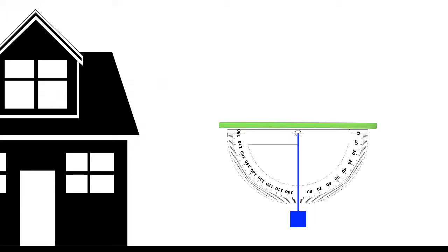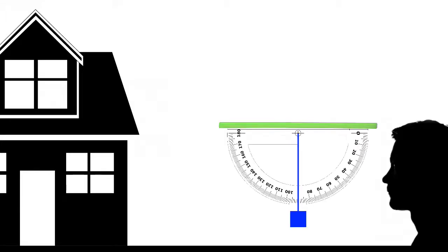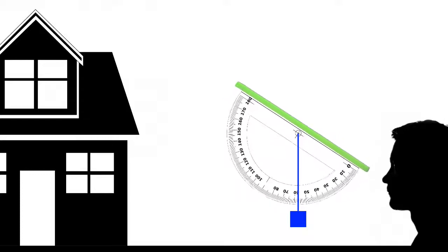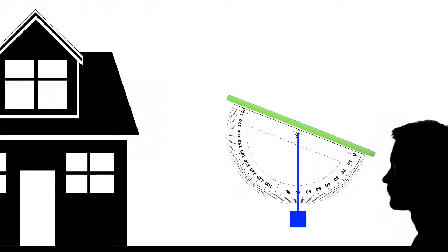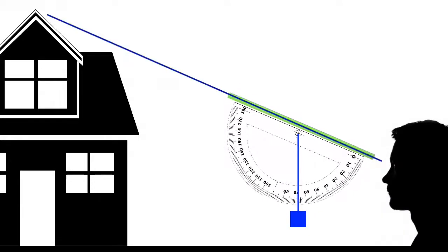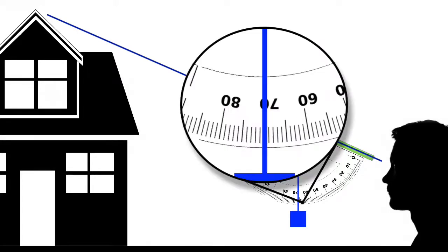To find the angle to the top of the house, first look into the straw and locate the top edge of the house. Next, wait for the weight to stop swinging and have a friend write down the reading of the protractor while you hold it steady.